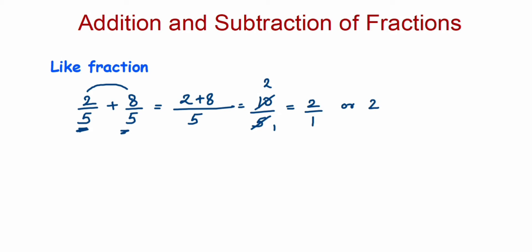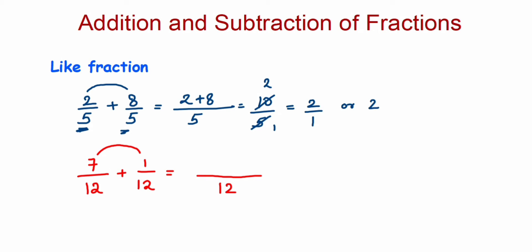Let's take one more example: 7/12 plus 1/12. Since the denominator is 12, we write down the same denominator 12 and simply add the numerators — 7 plus 1 is 8 — so we get 8/12. Now cancel it to reduced form: 4 twos are 8 and 4 threes are 12, so this equals 2/3. We cannot cancel further. That was about addition of fractions.